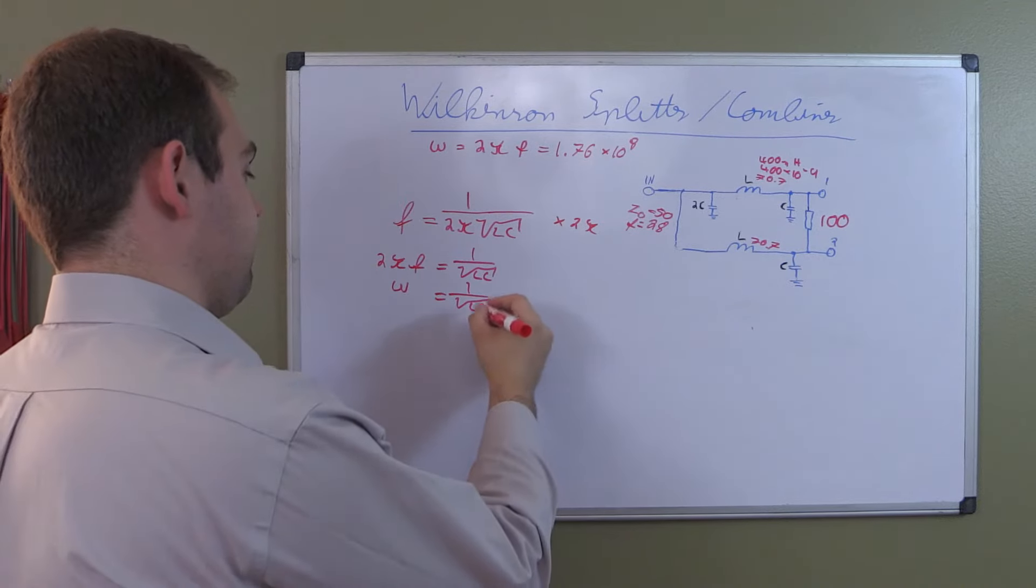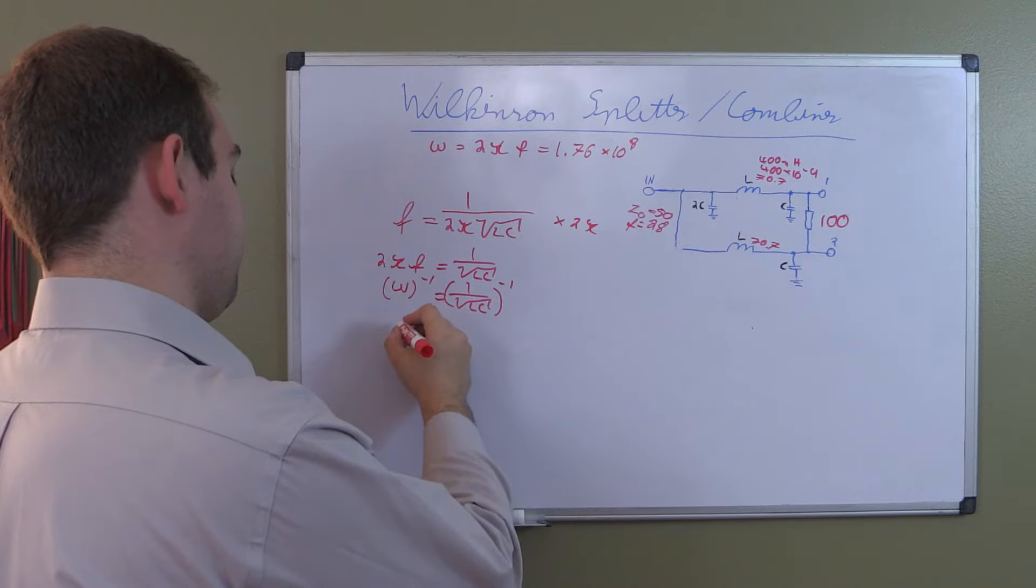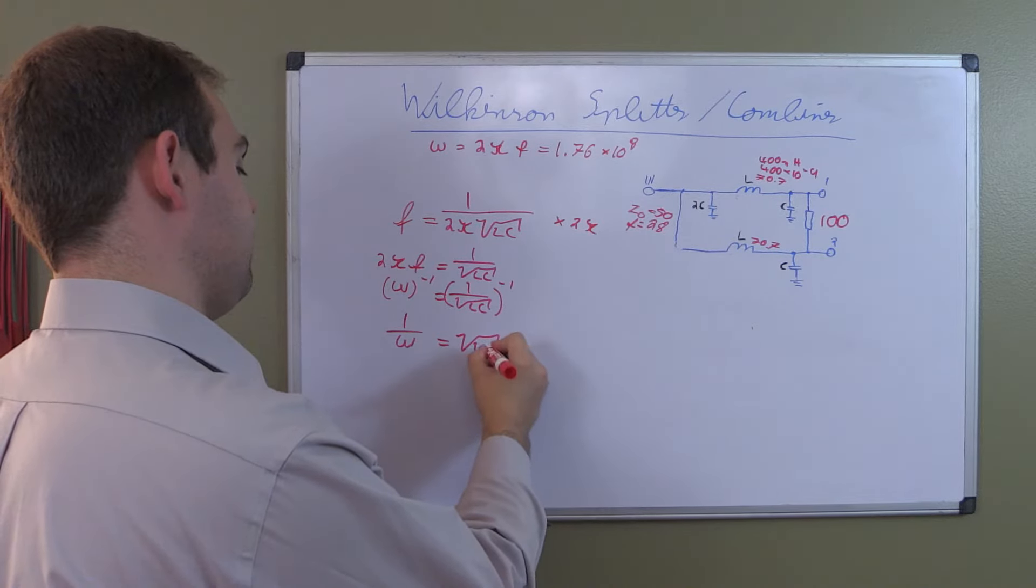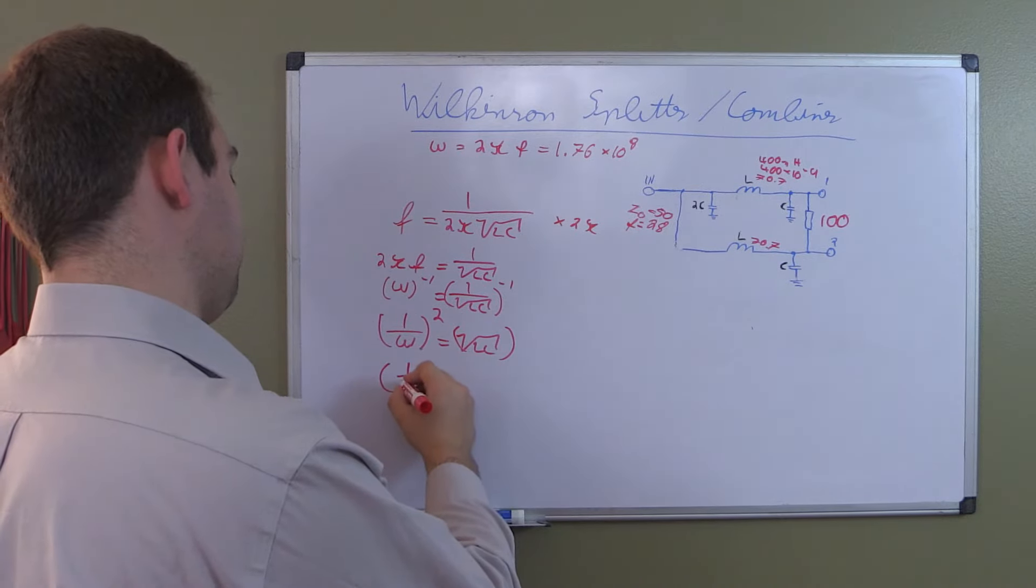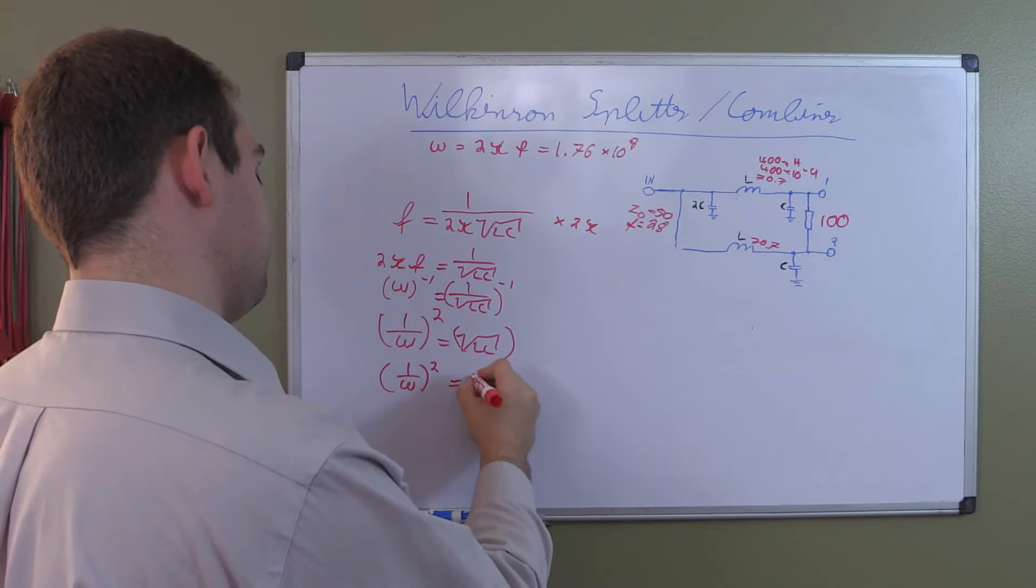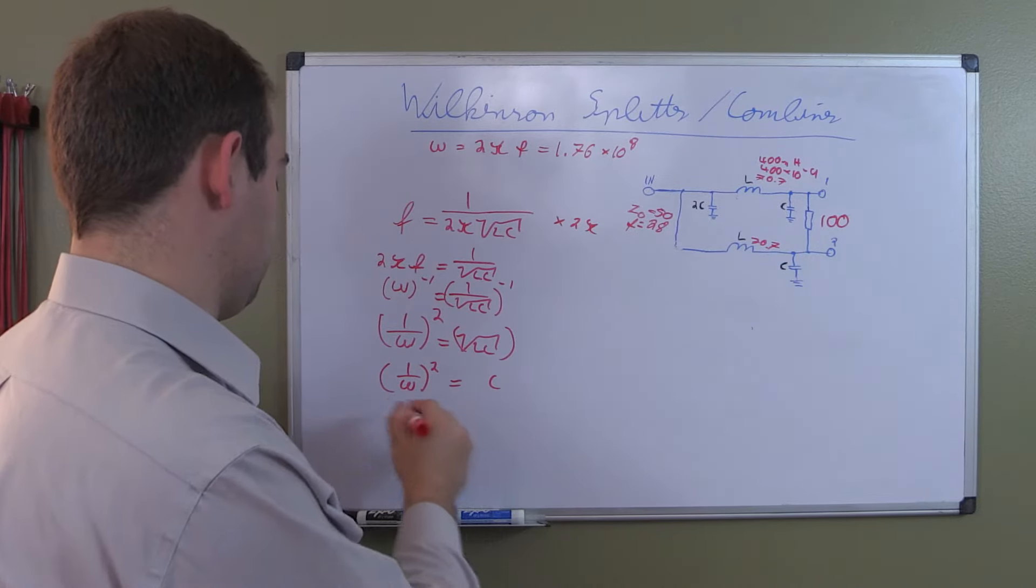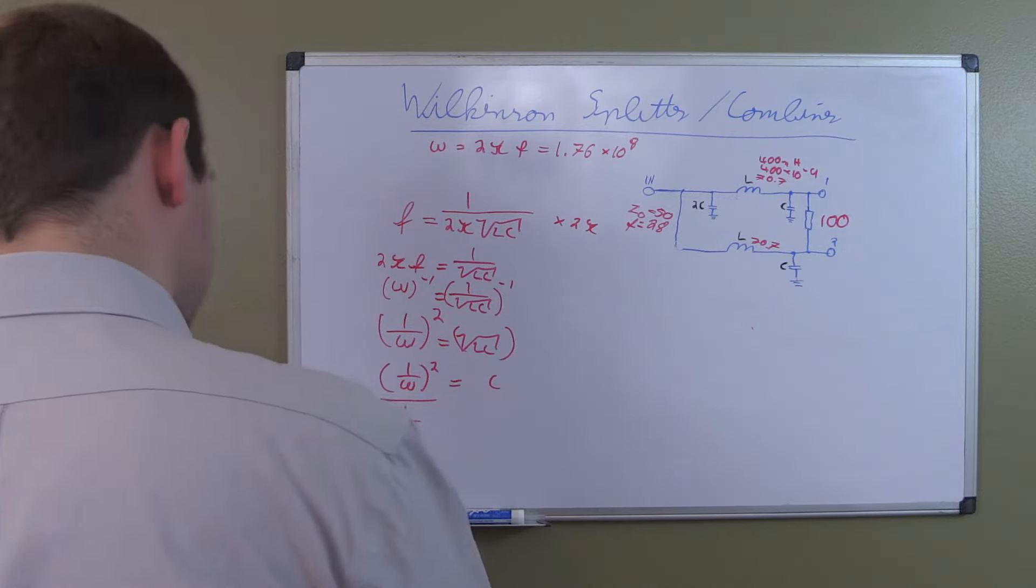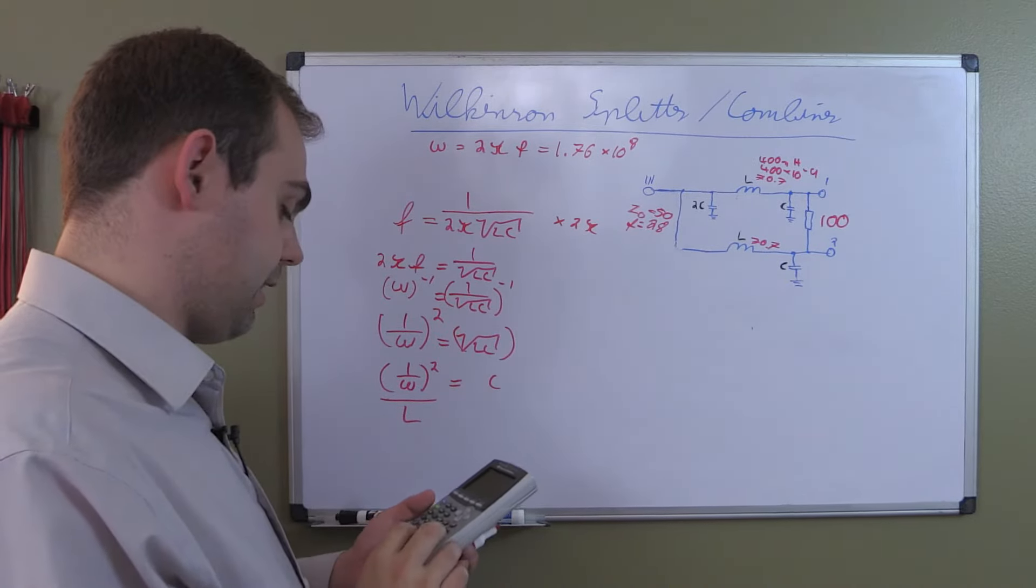I'm going to start by multiplying the whole thing by 2 pi. Now you're getting 2 pi F equals 1 over square root of L C. You see why I did this? Because 2 pi F equals omega. We calculated omega. So we can simplify and say omega equals 1 over square root of L C. Now let's flip the 1 over part by taking the inverse of both sides. That gives us 1 over omega equals square root of L C. Then we square both sides.